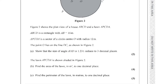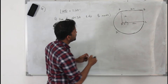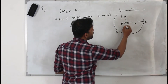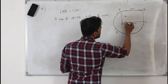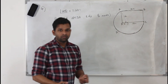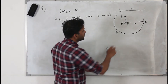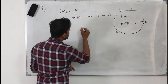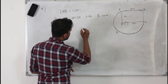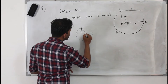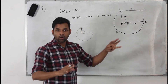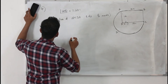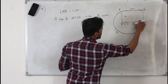Part B says: the lawn APCDA is shown shaded in the figure. They want you to find the area of this lawn in meter squared to one decimal place. To find the shaded area, we find the whole major sector first — we know in radians how to find the area of a sector — then minus this little triangle, and that gives the area of the lawn.